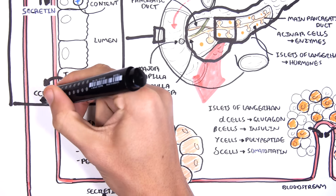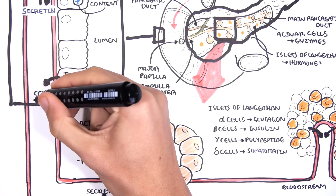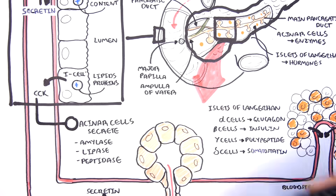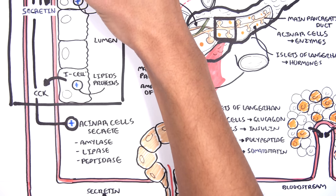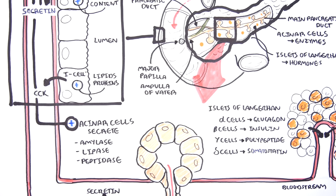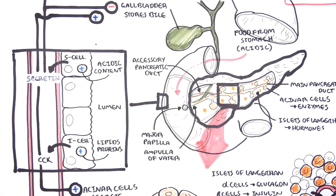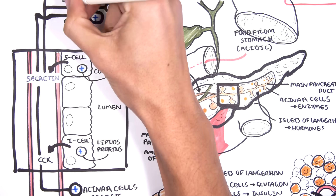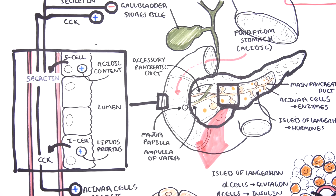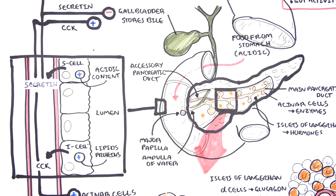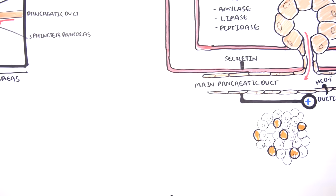Cholecystokinin (CCK) is a hormone whose main function is to stimulate the digestive process. It stimulates the acinar cells to secrete pancreatic juices to digest proteins and fats in the duodenum, and also tells the gallbladder and liver to produce and secrete bile to help in the digestion of fat.